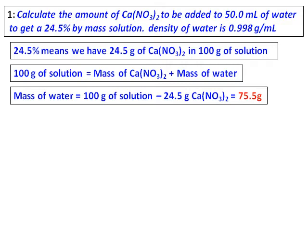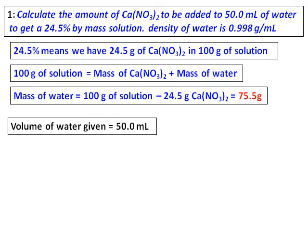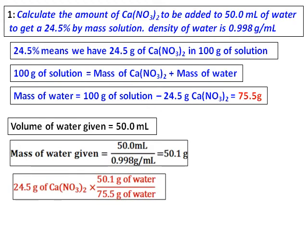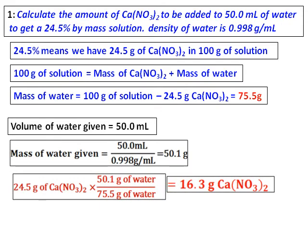Let's see how much water they have asked for in the question. Volume of water is given; convert that into mass and I get 50.1 grams. So just set up the equation: 24.5 grams of calcium nitrate times 50.1 grams of water, divided by 75.5 grams of water.